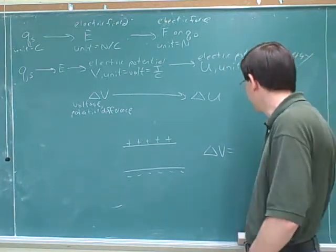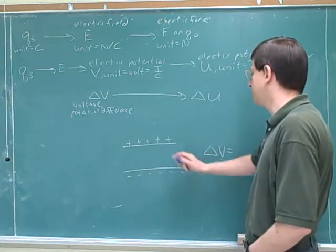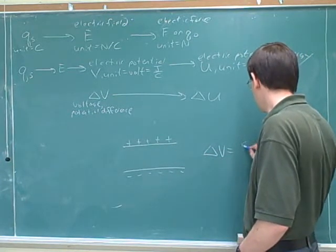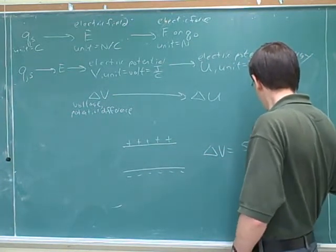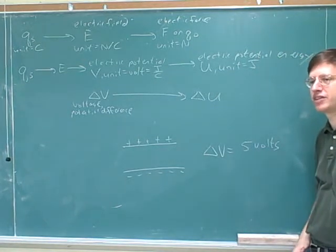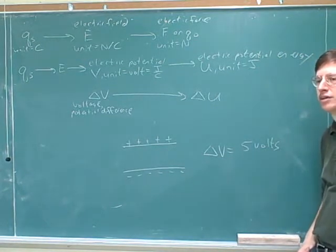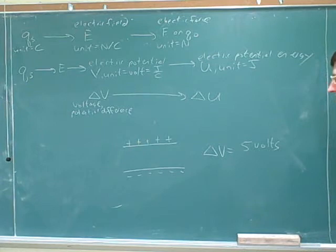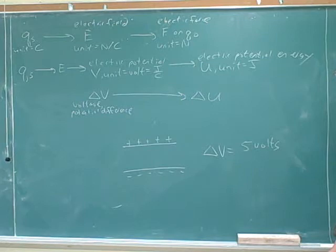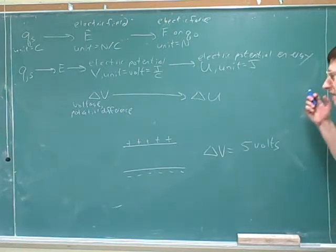Let's do a question that's almost identical to this. Suppose I tell you that the voltage difference in this capacitor is 5 volts. What does that tell us about the capacitor? A one coulomb charge moving from one plate to another would have a potential energy difference of 5 joules. Good.